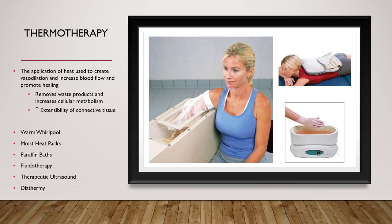A paraffin bath uses warmed wax and essential oils to help heat tissues. It is a great therapy for hands, feet, and elbows and is commonly used in sports. The body part is dipped in wax multiple times to create wax layers that trap heat. It is important that people do not move around when dipping, as it can create cracks in the wax allowing additional hot wax to seep in. The outer layer of wax acts as an insulator to trap heat, and when the heat is dissipated, the wax is removed and discarded.